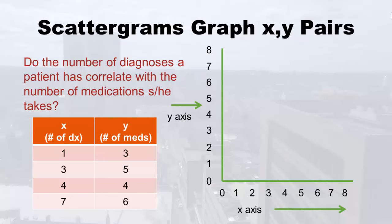If you don't have that many diagnoses, you probably aren't on that many meds. But if you have a lot of diagnoses, you should be on a lot of meds. You can have one really bad diagnosis with a lot of meds, or a bunch of diagnoses all taken care of with one med. So I put up just four x, y pairs — four pretend patients. The first patient has an x of one, meaning one diagnosis, but a y of three, meaning three meds.